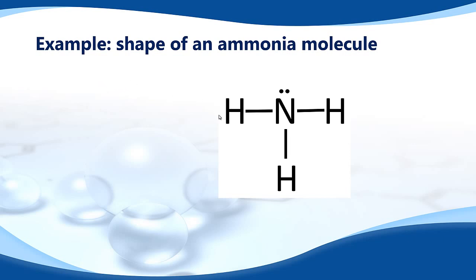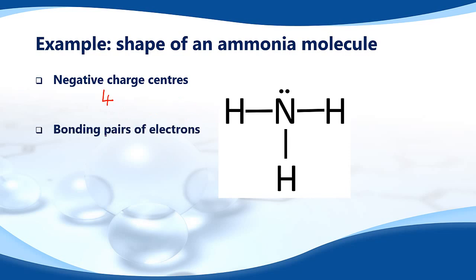The next example uses VSEPR theory to predict the shape of an ammonia molecule. Here's the Lewis structure for ammonia. We count the number of negative charge centers: a lone pair of electrons counts as one, and each of the three single covalent bonds counts as one, giving a total of four negative charge centers.